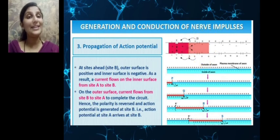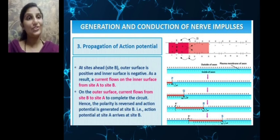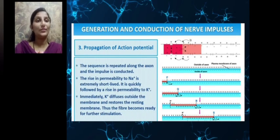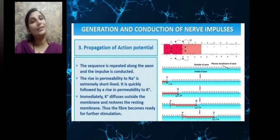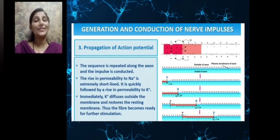At site A, the inner side becomes negative and outer side becomes positive again. But due to the transfer of the circuit, at site B the inner region becomes positively charged and the outer side becomes negatively charged. The action potential, which was generated at site A, now moves to site B. This sequence is then repeated along the axon — from site B it moves to the next forward site C — with inner charges moving from B to C and outer from C to B. This continues throughout and the impulse is conducted along the entire axon.